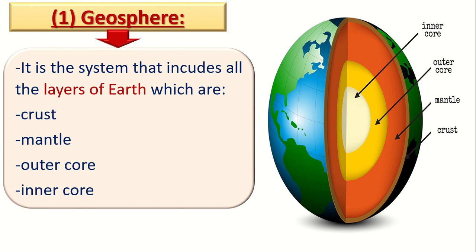After the mantle, we have the core of the Earth. The core consists of two parts: the outer core and the inner core. So we have 4 layers: crust, mantle, outer core, and inner core.